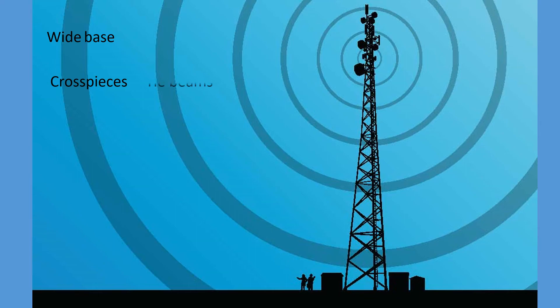These cross pieces are called tie beams and support the members by holding or pulling on them. This pulling force is called a tension force.